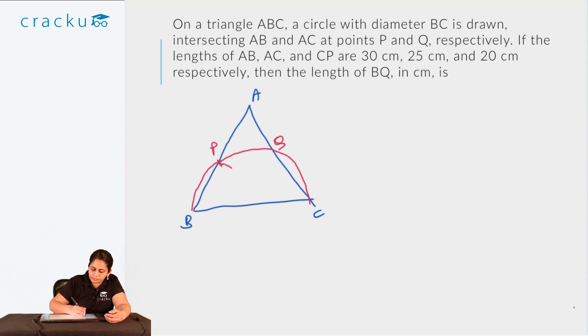So if I join PC and PQ of this, what information about lengths is given? I know that the length of AB is 30 centimeters, AC is 25 centimeters, and CP is 20 centimeters. So one thing that clearly jumps to me is that this is a diameter of the semicircle. So any angle subtended by a diameter would be a 90 degree angle. So this should be 90 degrees, this should be 90 degrees.